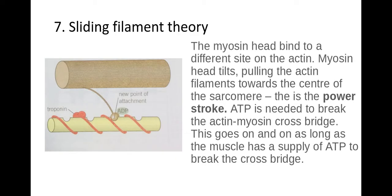The myosin head will then bind to a different site on the actin, the head will tilt again in that power stroke shortening the sarcomere, ATP will be needed to break that cross-bridge, and then the same thing will happen again and again. The actin-myosin cross-bridge will form many many times within a single muscle contraction.